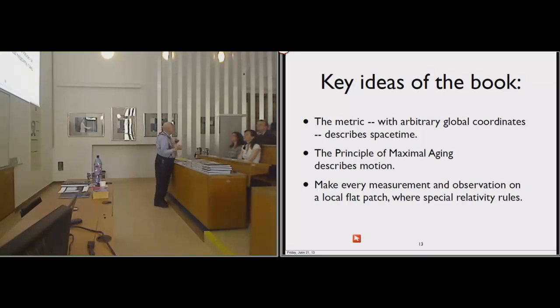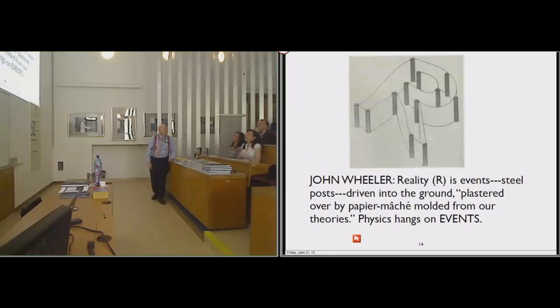And finally, since the coordinates are arbitrary, the difference in coordinates mean nothing. You chose the coordinates, so the difference between coordinates has no meaning whatever. However, you can find a flat place. If you take a small enough region, it's essentially flat. The earth is essentially flat in Slovakia. So you can use a flat roadmap and you don't get lost. The same is true of spacetime. You make every measurement and observation on a local flat patch, and you can use special relativity. These are the key ideas of the book.